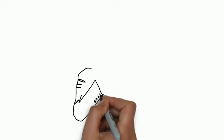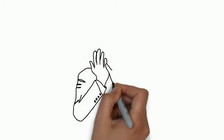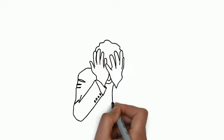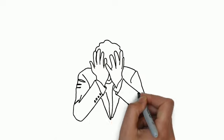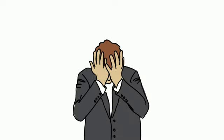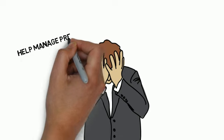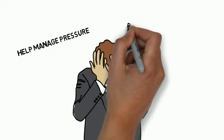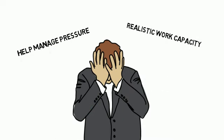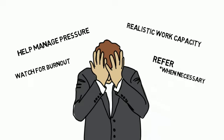Millennials are also pressured. They feel pressure to perform, which leads to reliance on structure. Conformity relieves pressure to improvise. How to deal with this trait? Help them manage pressure, develop realistic expectations for their capacity for work, and watch for burnout. Refer when necessary.